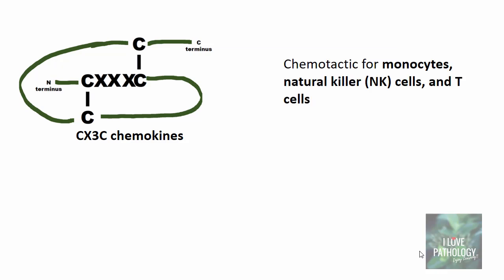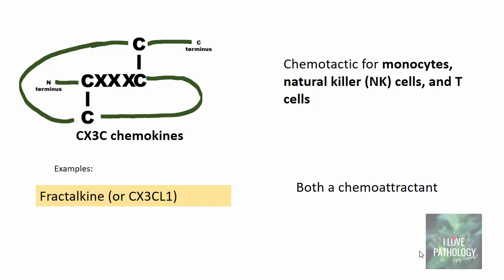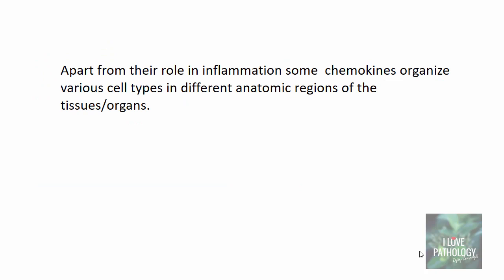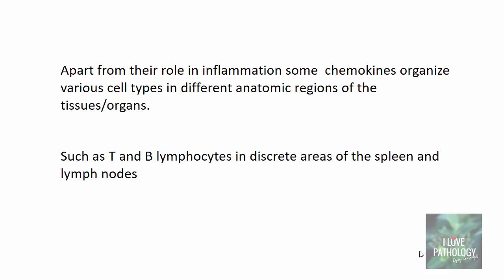CX3C chemokines are chemotactic for monocytes, natural killer cells, and T cells. The only example of a CX3C chemokine is fractalkine, also known as CX3CL1, which is not only a chemoattractant but also an adhesion molecule — mediating the role of leukocyte adhesion in the cellular events of acute inflammation. Apart from their role in inflammation, some chemokines organize various cell types in different anatomic regions of tissues or organs, for example placing T and B lymphocytes in discrete areas of the spleen and lymph nodes. These are called homeostatic chemokines.